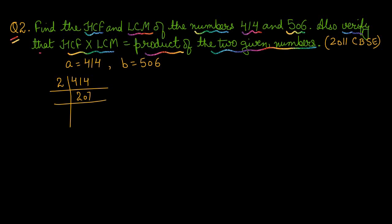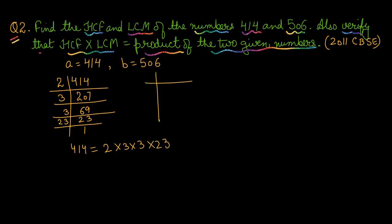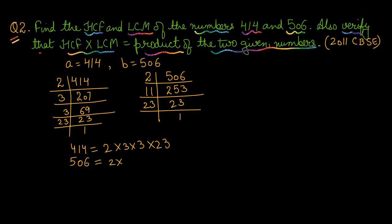414 is divisible by 2, giving 207; then by 3, giving 69; again divisible by 3, giving 23 — and 23 is a prime number. So 414 = 2 × 3 × 3 × 23. Next, 506 is divisible by 2, giving 253; then divisible by 11, giving 23. Since 23 is prime, the factors of 506 are 2 × 11 × 23.